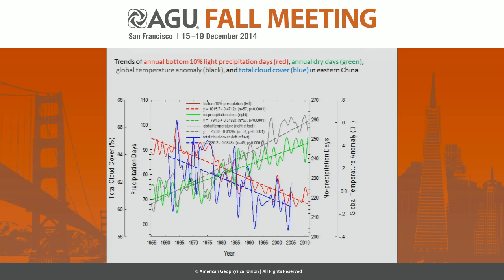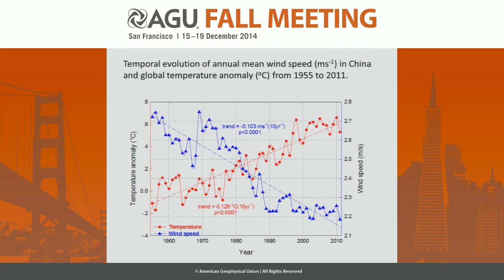Total cloud cover decreasing is also very important for air pollutants. As you know, on clear nights there tends to be nighttime inversion formation. So more clear days are going to cause more trapping of air pollutants. Also shown here is the global temperature anomaly alongside the decrease in eastern China's average annual wind speed, which shows a very clear decreasing trend.